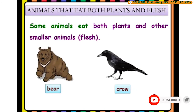Let us know about the animals that eat both plants and flesh. Some animals eat both plants and other smaller animals' flesh. For example, bear and crow are both plants and flesh eaters.